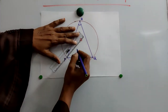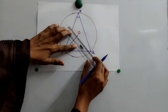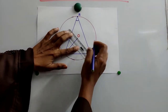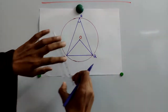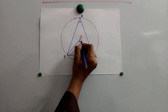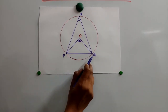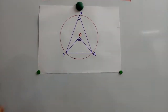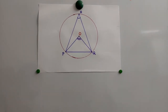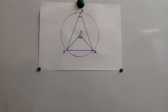Next, angle POQ. PQ is the chord, O is the center of the circle. Angle POQ is the angle subtended by chord PQ at the center. Here we are going to study some theorems.